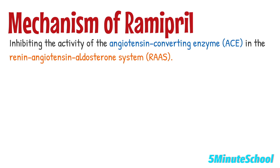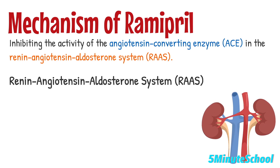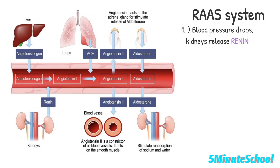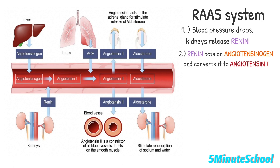In terms of the mechanism of action, Ramipril exerts its therapeutic effects by inhibiting the activity of the angiotensin converting enzyme in the renin angiotensin aldosterone system. This system is a hormone system that plays a critical role in regulating blood pressure, fluid balance and electrolyte levels in the body. When blood pressure drops or blood volume decreases, the kidneys release an enzyme called renin, which acts on angiotensinogen, a precursor protein, to form angiotensin 1.